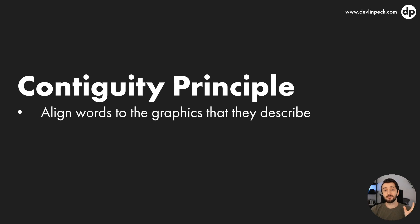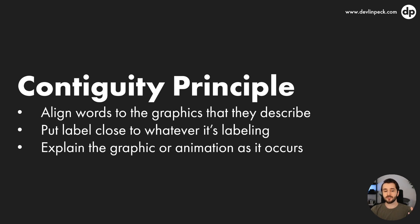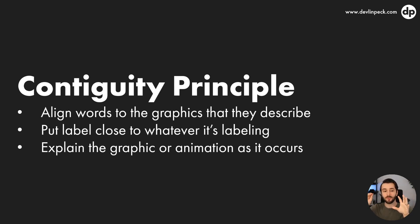This is aligning in time and space. Spatial contiguity means we want to put the labels for things very close to whatever it is that we're labeling. There's also temporal contiguity, which says that we should explain a graphic or animation as it's occurring — so instead of showing someone an animation and then afterwards explaining what happened, we should show them what's happening and explain it as it's happening. We don't want to separate the visual from the labeling or explanation — we want to do those things at the same time or as close as possible.